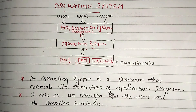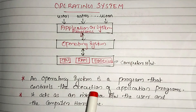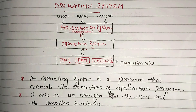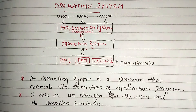What is an operating system? An operating system is a program that controls the execution of application programs. It acts as an interface between the user and the computer hardware.